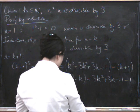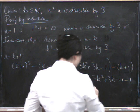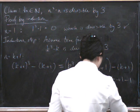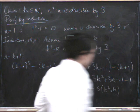So we've got all together k cubed minus k. And then over here we've got 3 times k squared plus k, because this bit cancels out.